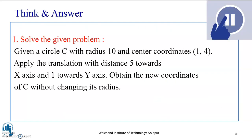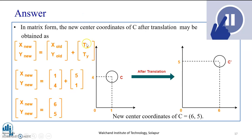Now, I request the students to pause the video for some time and solve the given problem. Here, the problem is: given a circle with radius 10 and center coordinates (1, 4), apply the translation with distance 5 towards x-axis and 1 towards y-axis. Obtain the new coordinates of the center without changing its radius. Think for a while, apply the translation homogeneous coordinate matrix and get the answer. Pause the video for some time. Moving ahead. As you can see, this is the new center for the circle after translation, and the new coordinates are (6, 5). The diagram shows the circle after translation.